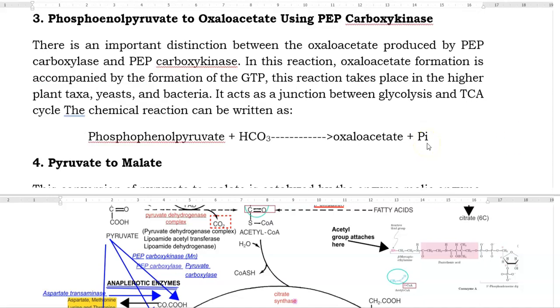The next step involves phosphoenol pyruvate to oxaloacetate using the PEP carboxykinase enzyme. There is an important difference between the oxaloacetate produced by PEP carboxylase as well as PEP carboxykinase. In this reaction oxaloacetate formation is accompanied by the formation of GTP. This reaction takes place in higher plants, yeast as well as in bacteria.